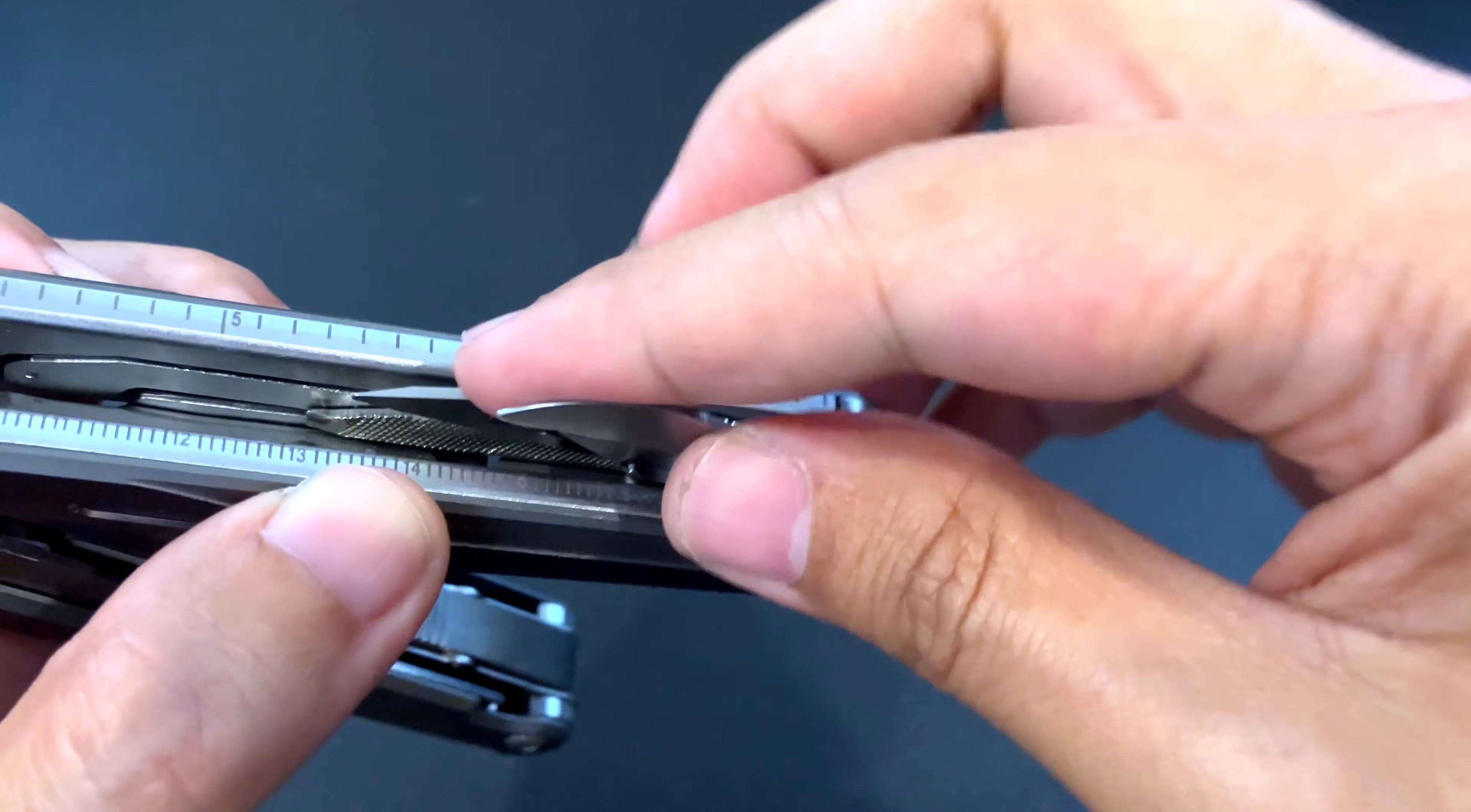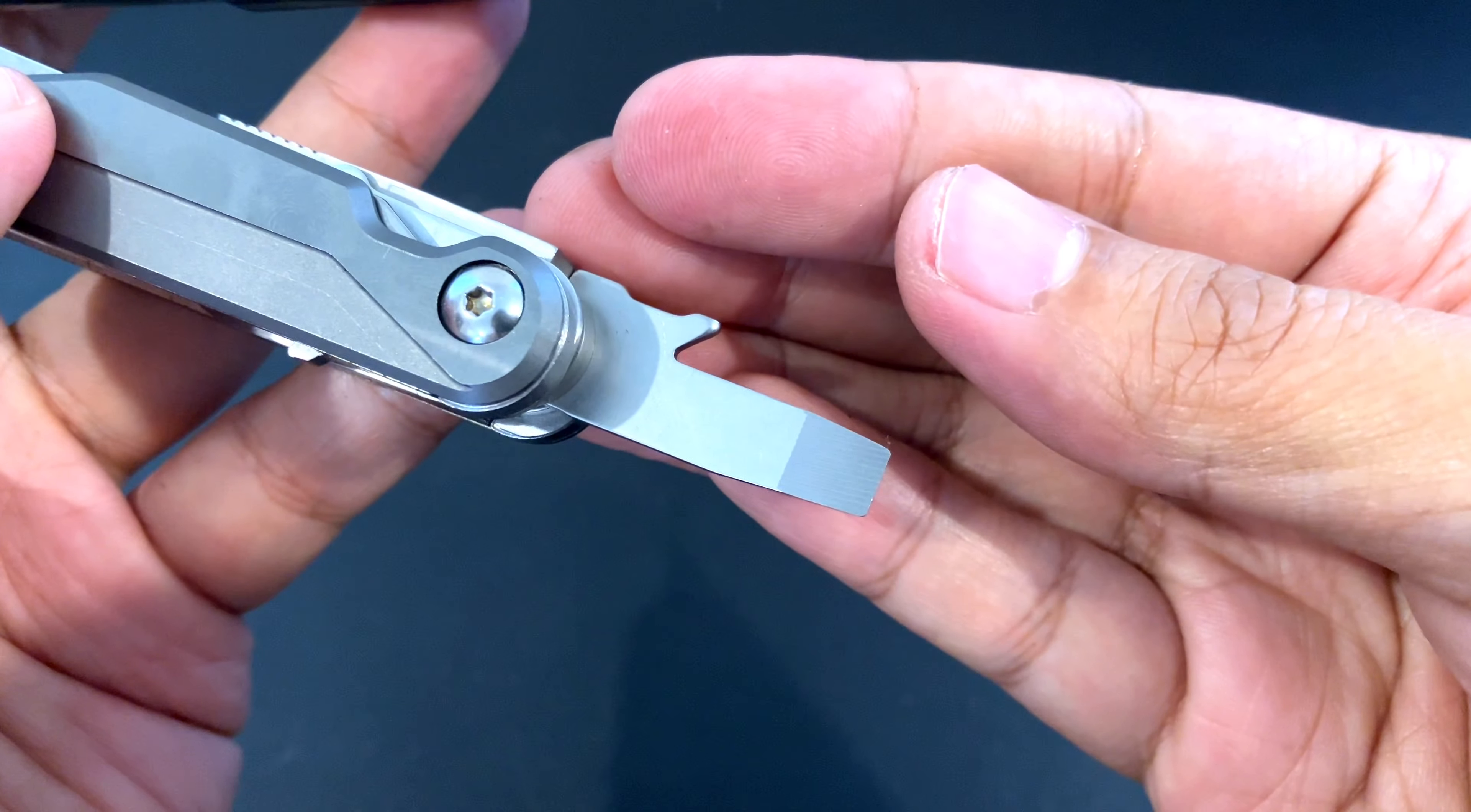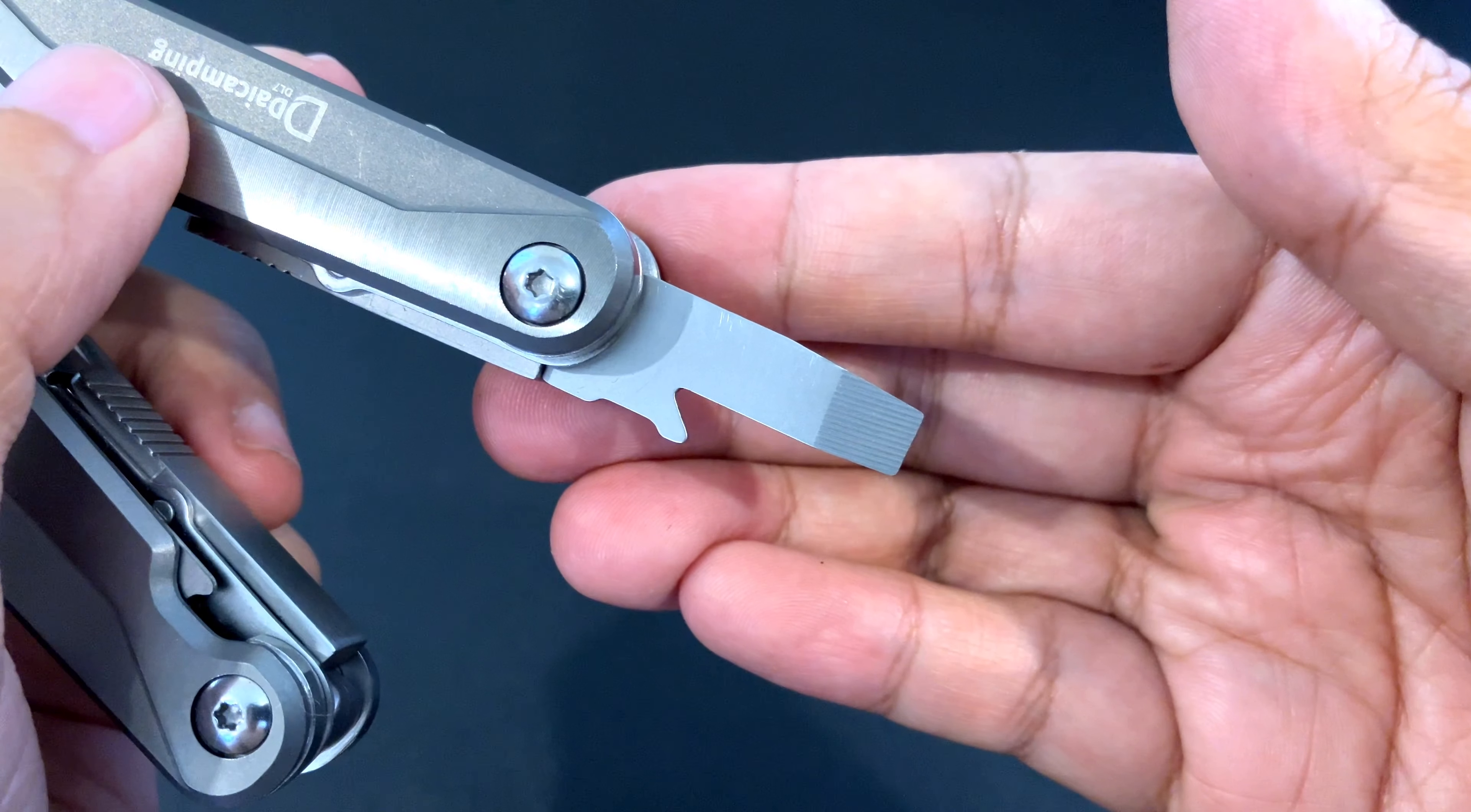And then you have a bigger flat head that can also be used as a pry bar. Lightweight prying, I guess. It's a little bit thinner, but yeah, better than nothing.